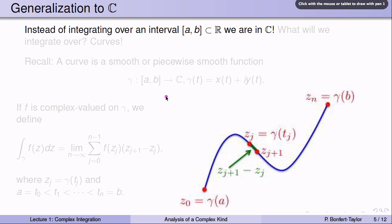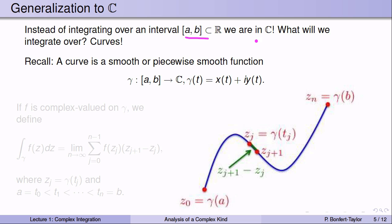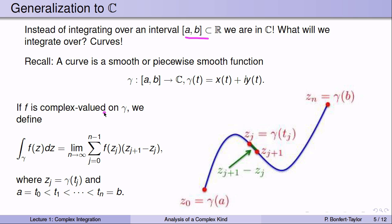How do we generalize this to ℂ? Instead of a real-valued function with a real variable, we have a complex-valued function with a complex variable. Instead of integrating over an interval, we integrate over curves. A curve is a smooth or piecewise smooth function γ defined on an interval into ℂ, written γ(t) = x(t) + i·y(t). If f is a complex-valued function defined on γ, we define the integral over γ of f(z) dz as the limit of the sum of f(z_j)·(z_{j+1} - z_j), a direct generalization of the left-hand sum.